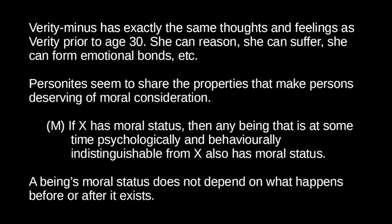We can draw a distinction between people on the basis of skin color — there is a difference — but that's not a morally relevant property. Similarly, gender or DNA type are not morally relevant. Johnston says likewise: what happens before a being comes into existence, or after it ceases to exist, are just not morally relevant. They're not relevant to whether that being is worthy of moral consideration and respect.